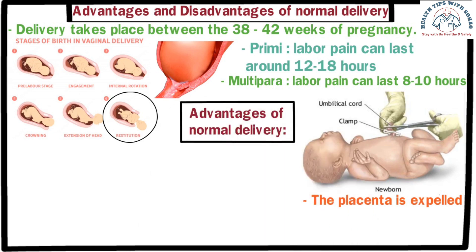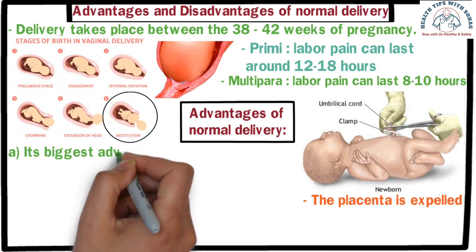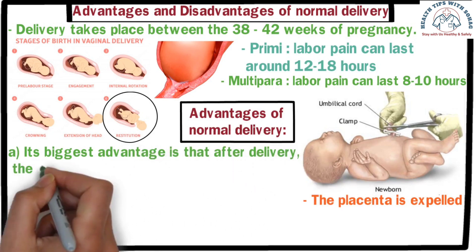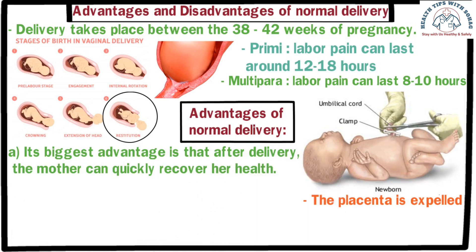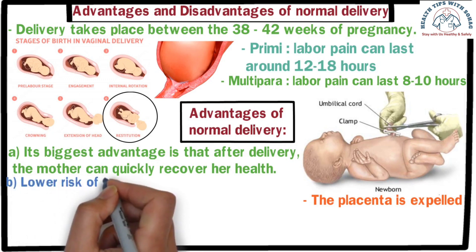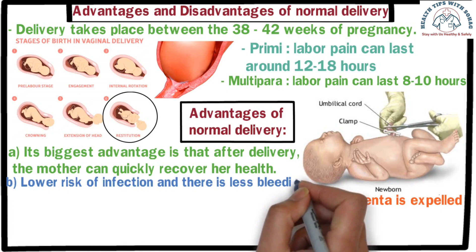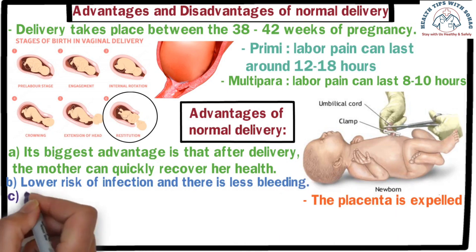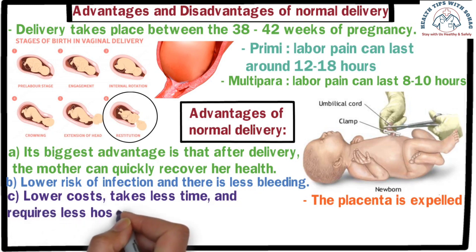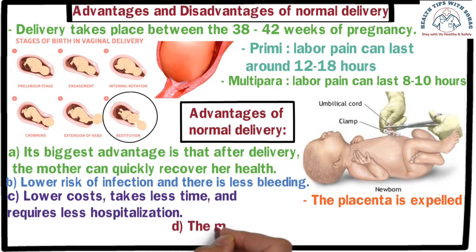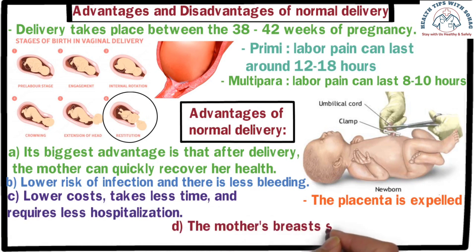Now let's discuss the advantages of normal delivery. Number one: normal delivery is a natural process — its biggest advantage is that after delivery the mother can quickly recover her health and resume daily activities. Number two: after normal delivery, the risk of infection is lower and there is less bleeding. Number three: normal delivery involves lower cost, takes less time, and requires less hospitalization. Number four: after a normal delivery, the mother's breast milk supply comes quickly, allowing the baby to start breastfeeding soon after delivery.